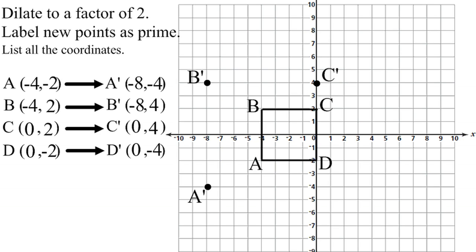0, negative 4 is D prime. So 0 is neither left or right. Instead of going up, you have negative 4, so you go down and put the point right there. And you label it D prime.